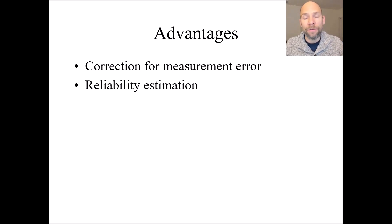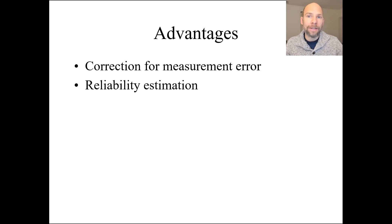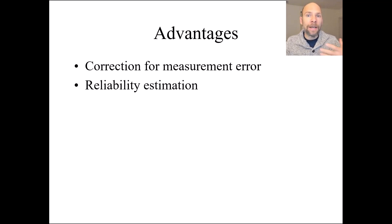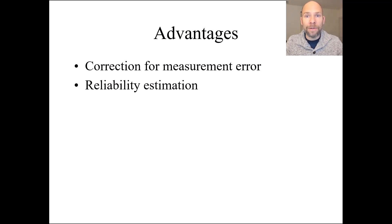We get a built-in correction of regression coefficients and correlation coefficients in the structural models, so that our inference about relationships between constructs is less biased. Correction for measurement error leads to less biased results when we estimate and test path coefficients, regression coefficients, and correlation coefficients. This distinguishes SEM from regression analysis, path analysis with observed variables, analysis of variance, and other methods that use exclusively observed or manifest variables.